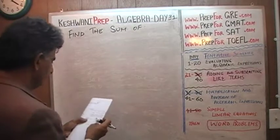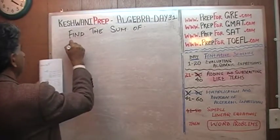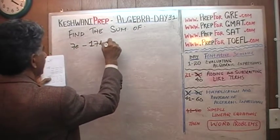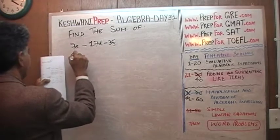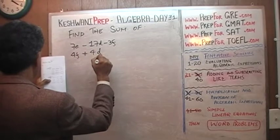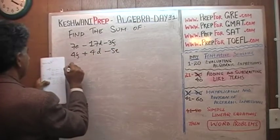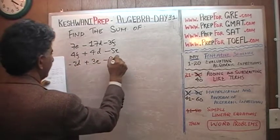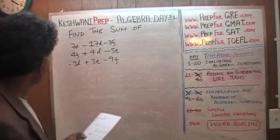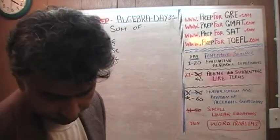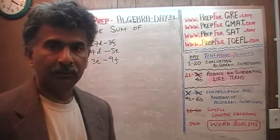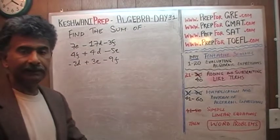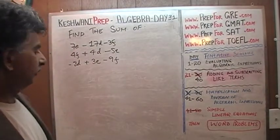For the next problem we're given three expressions: 7E minus 17D minus 3F; then 4F plus 4D minus 5E; and then negative 8D plus 3E minus 9F. Again, in order to find the sum we have to make sure that we add all the like terms together — all the D's together, all the E's together, and so forth. So the first thing we do is line them up properly.